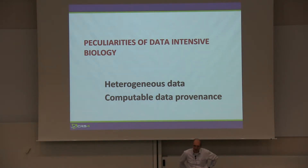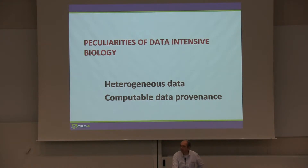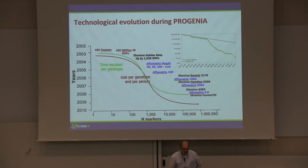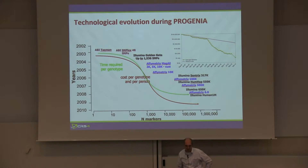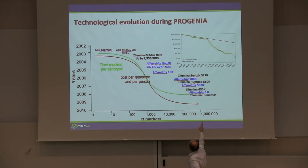Now we'll talk a little bit about the peculiarities of data intensive biology. One has to do with heterogeneous data, and the other with computable data provenance. What you see here is the technological evolution of microarray technology — the big image on the left — and on the top right is the usual decay of cost for genome sequencing. This one goes from TaqMan to the latest high-resolution microarray technology like Affymetrix, Illumina one million, and so on.